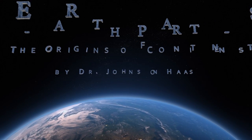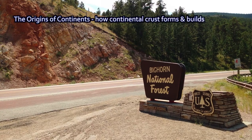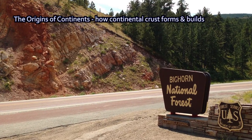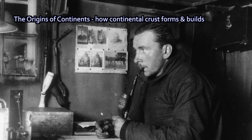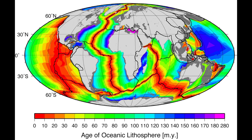Hi, I'm Dr. Johnson Haas, and welcome to Earth Parts. In a previous lecture, I talked about the discovery of plate tectonics by Alfred Wegener, his realization that the continents used to fit together and that they move across the surface of the Earth. Later work confirmed this and discovered that at seafloor spreading centers, new oceanic crust is produced. The ocean floor is young because it's then later subducted underneath the continents. I talked about this, but I didn't talk much about continents themselves.